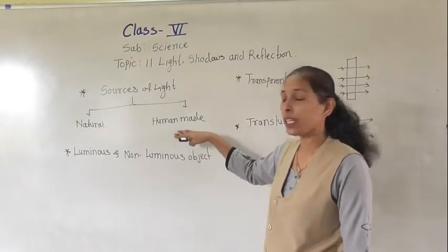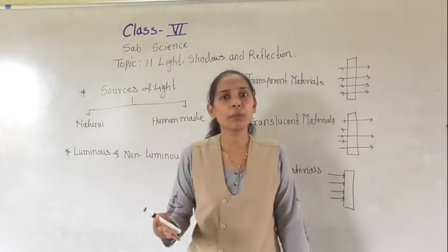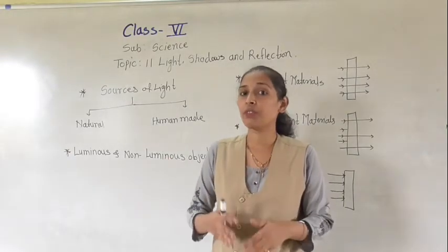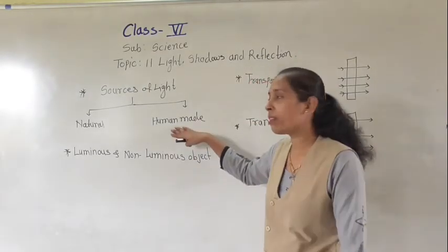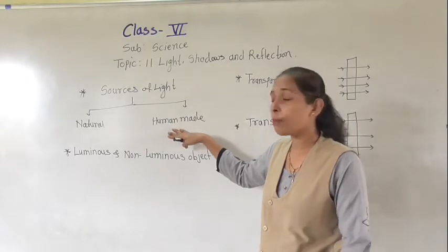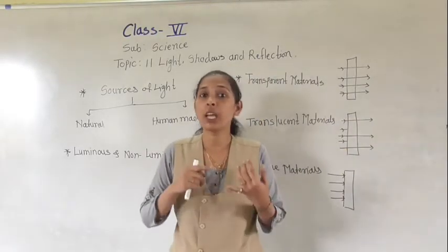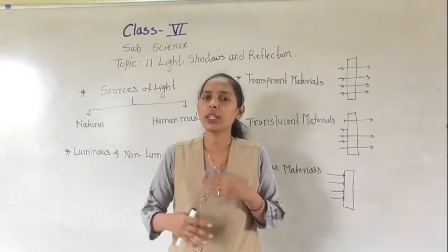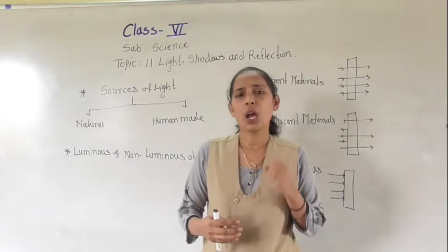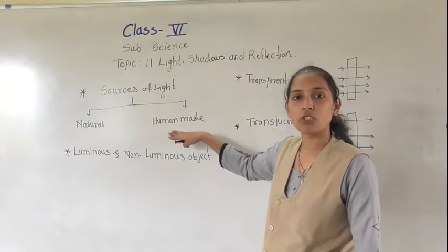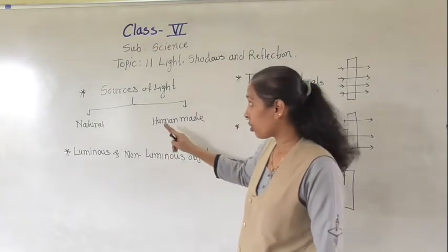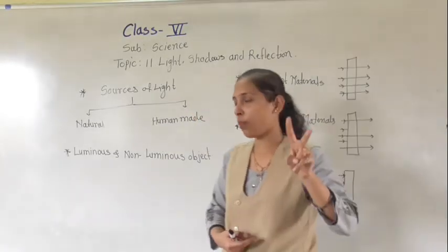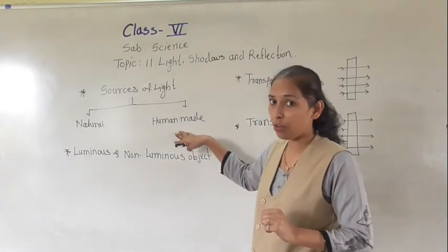Human-made sources of light are the sources which are made by humans — which are artificial. For example, electric bulbs, tube lights, candles, different lamps, batteries, and torches. All these are examples of human-made sources of light. So in summary, there are two types of sources of light: natural sources and human-made sources.